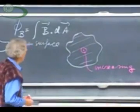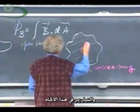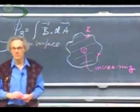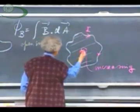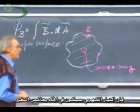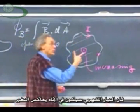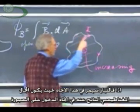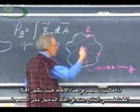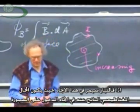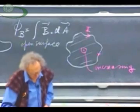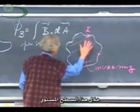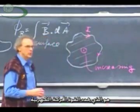I will now get an EMF, a current flowing in this direction. I will now get an EMF — Lenz's Law. If the magnetic field is increasing, then the current will be in such a direction that it opposes the change. It doesn't want that magnetic field to increase, and so the current goes around like this, so that it produces a magnetic field that is into the blackboard. And so it is the flux change of the magnetic field through this flat surface that determines the EMF.